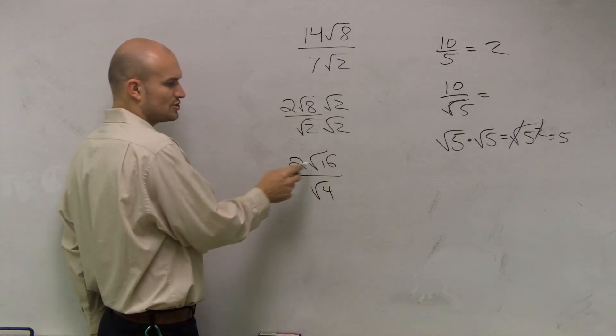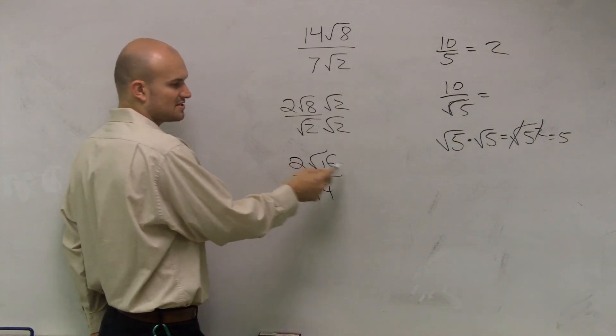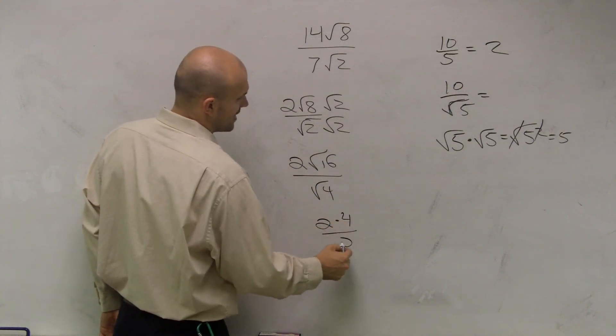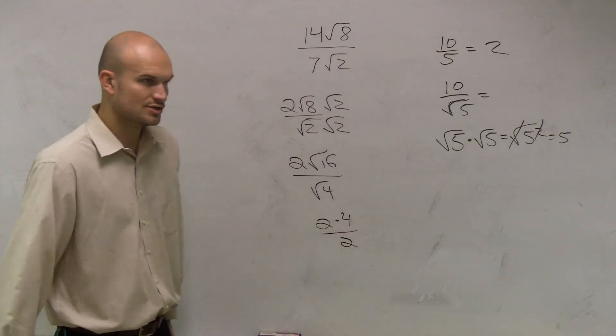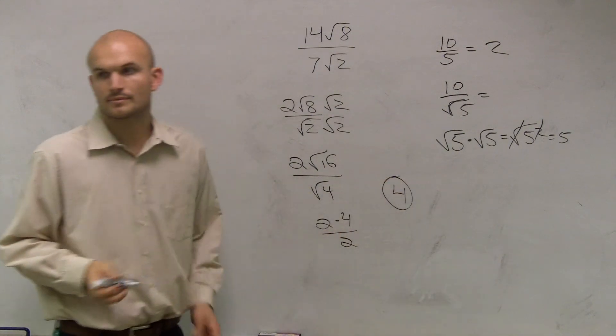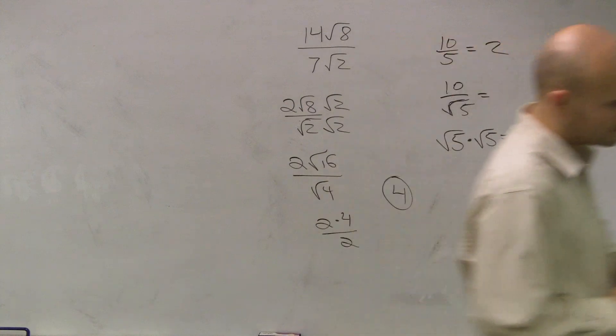Well, two times square root of 16 is four, so I get two times four divided by radical four, which is two. My final answer equals four. Got it? Okay.